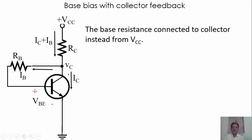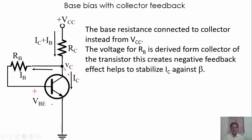As you see in this figure, instead of connecting this resistance to VCC, we are connecting this resistance to the collector of the transistor. So the voltage for RB is derived from the collector of the transistor, and this creates a negative feedback effect.